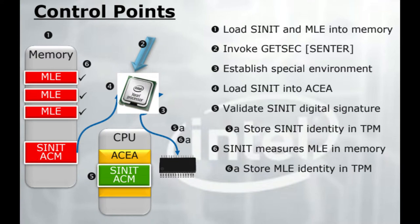There are a few control points inside the Intel TXT architecture. The first control point: load the CNET and MLE into memory, then invoke the GETSEC instruction, which is the center. Third, establish a secure environment and load the CNET into ACEA. Then validate the CNET digital signature, which stores the CNET identity inside the TPM. Last, CNET measures the MLE in memory, storing the MLE identity inside the TPM.